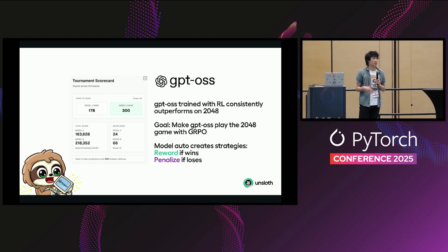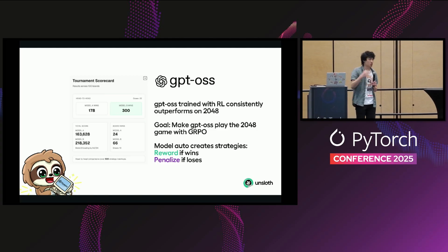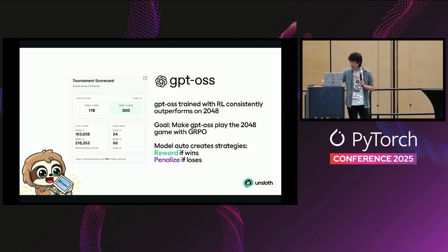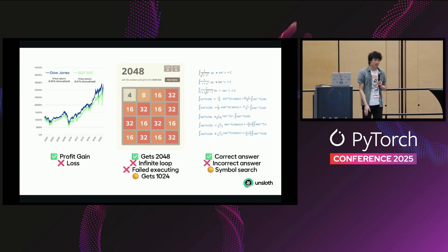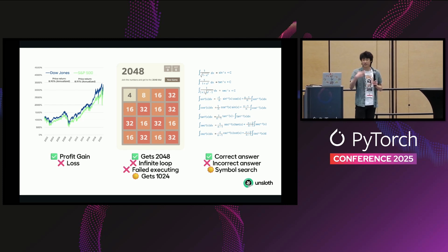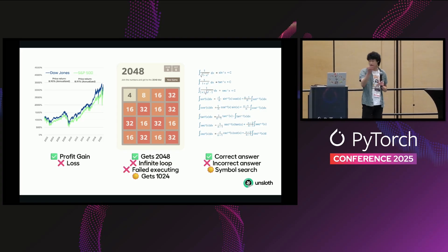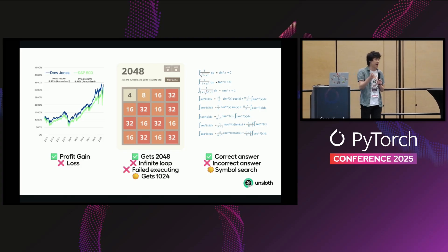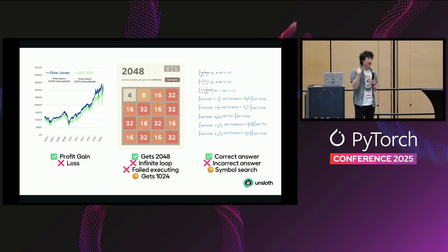For example, in the GPT-OSS 2048 case: if the model never gets 2048 you penalize it; if it gets 1024 you reward it a little; if it actually gets 2048 you maximize the reward dramatically; if the Python code doesn't even execute, that's definitely a minus reward. Similarly for stock trading: increase profit is good, losses decrease reward. For math: correct answer is good, incorrect is bad. Most large model labs might just assign a binary reward — has the game been played successfully, zero or one — but then you have to wait a very long time, so you need to add more reward functions to help the RL algorithm learn.